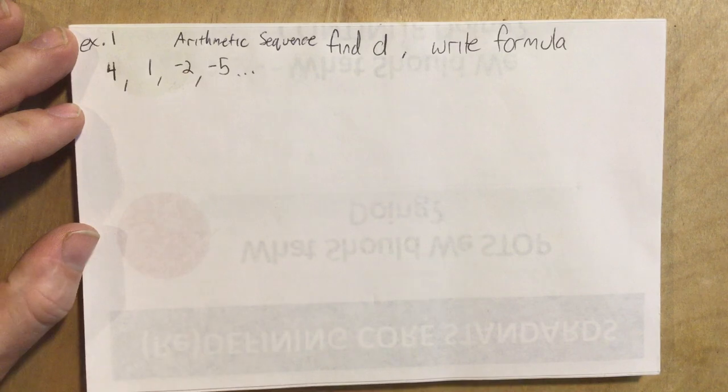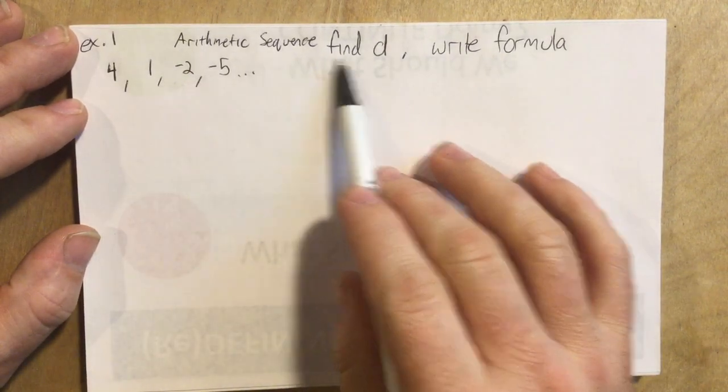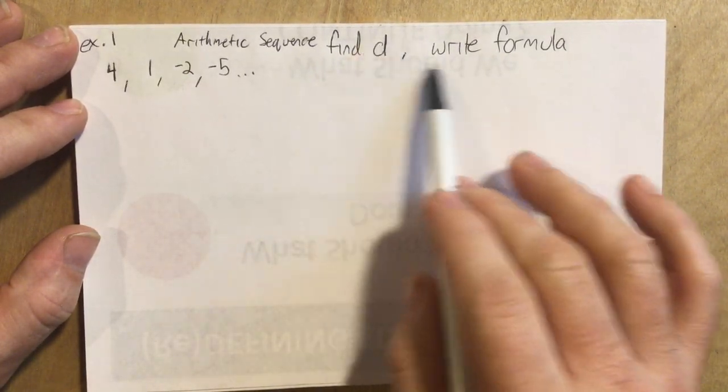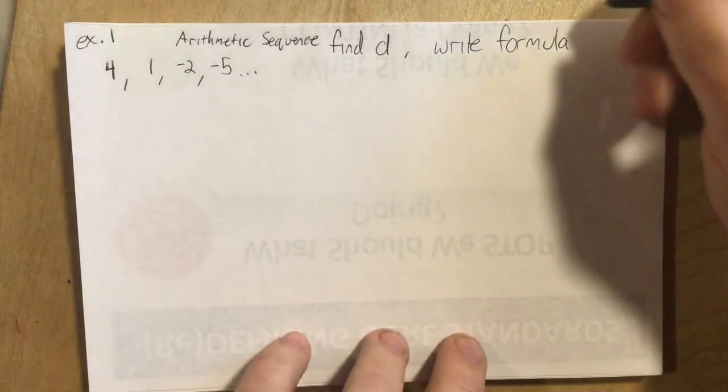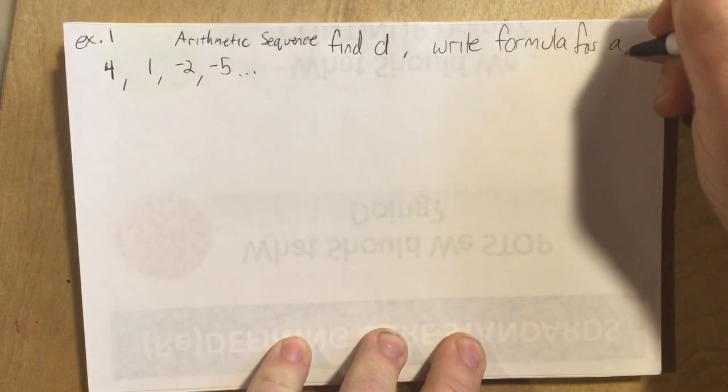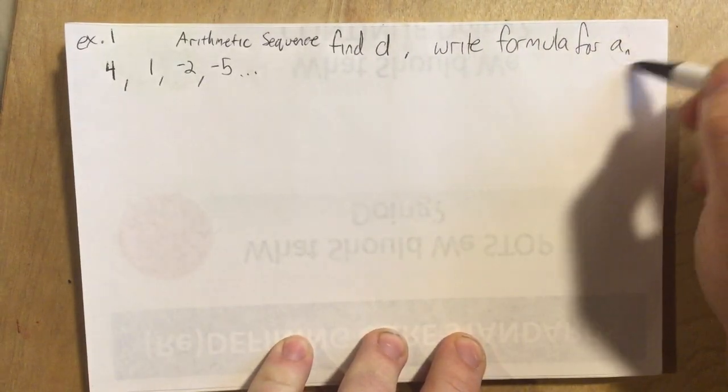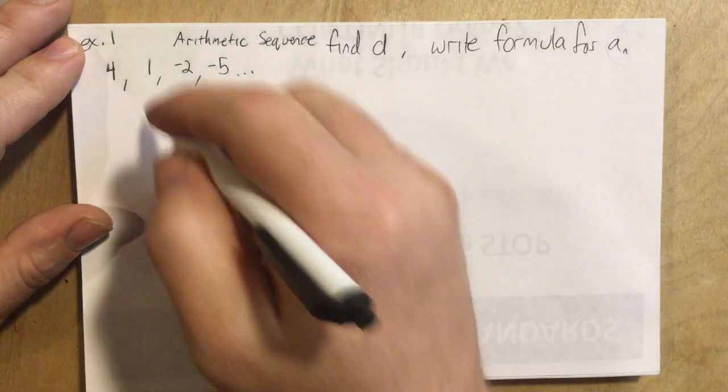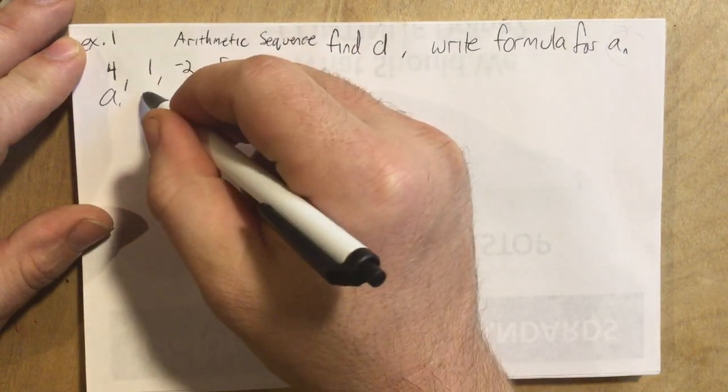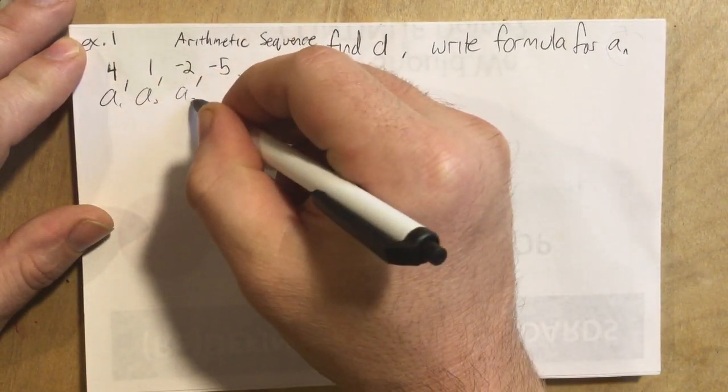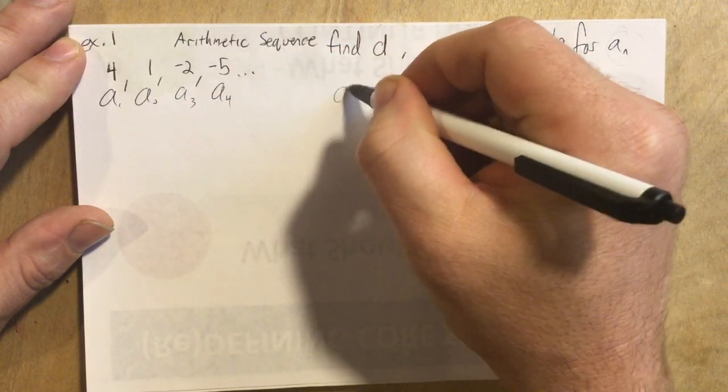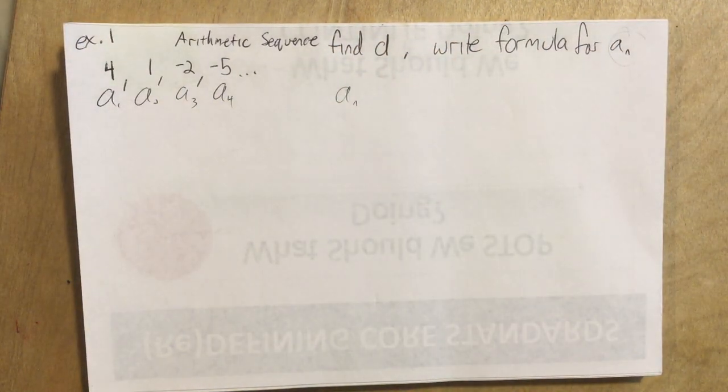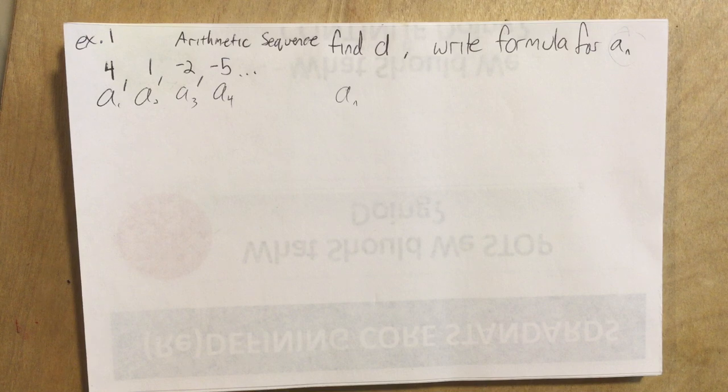So here we go, here's the first example. Of course we're talking about arithmetic sequences. We're supposed to find the common difference and write the formula for a_n. So a_n is just a formula that depending on which term we want to find, we can plug in n and find that term. So this is a_1, a_2, a_3, a_4, and anywhere along the line, a_n, any n, we can find it using the formula.